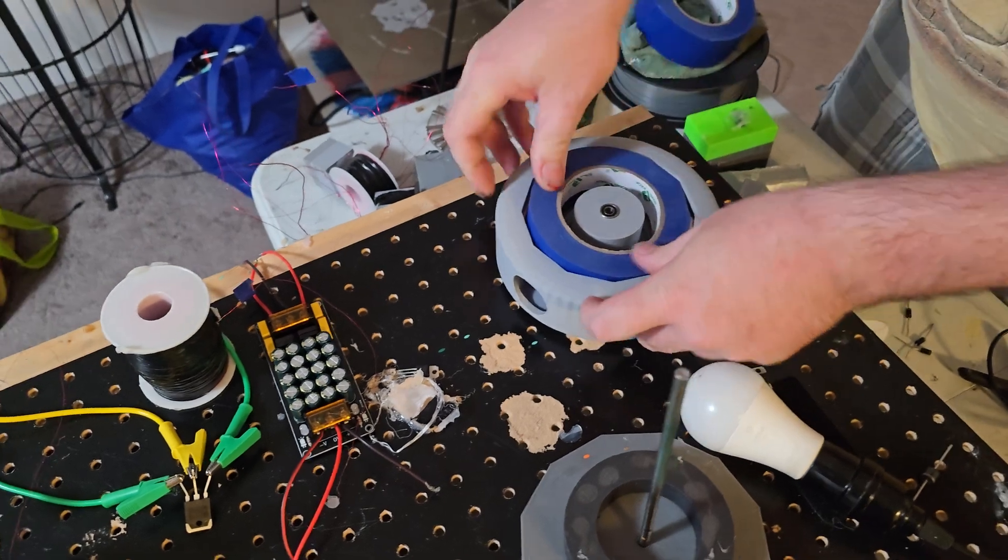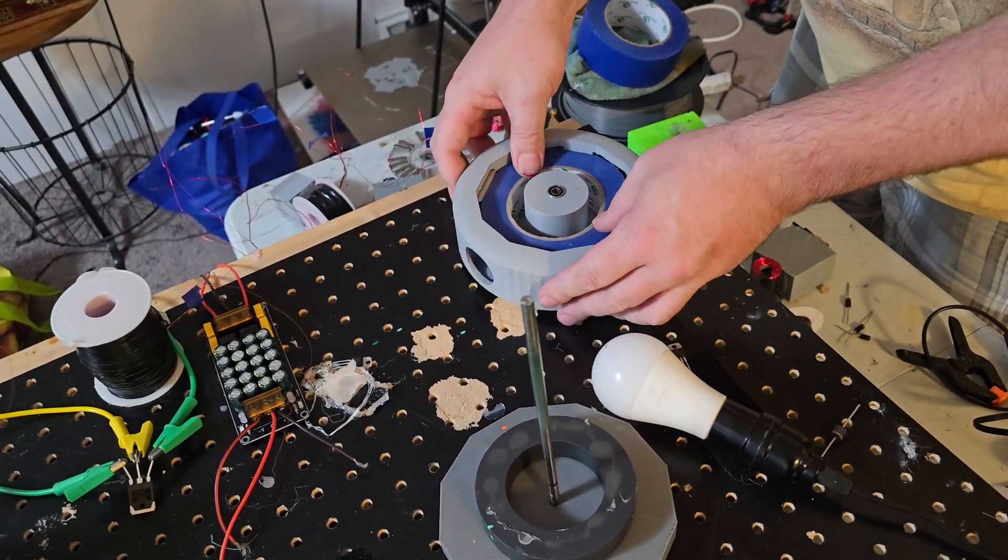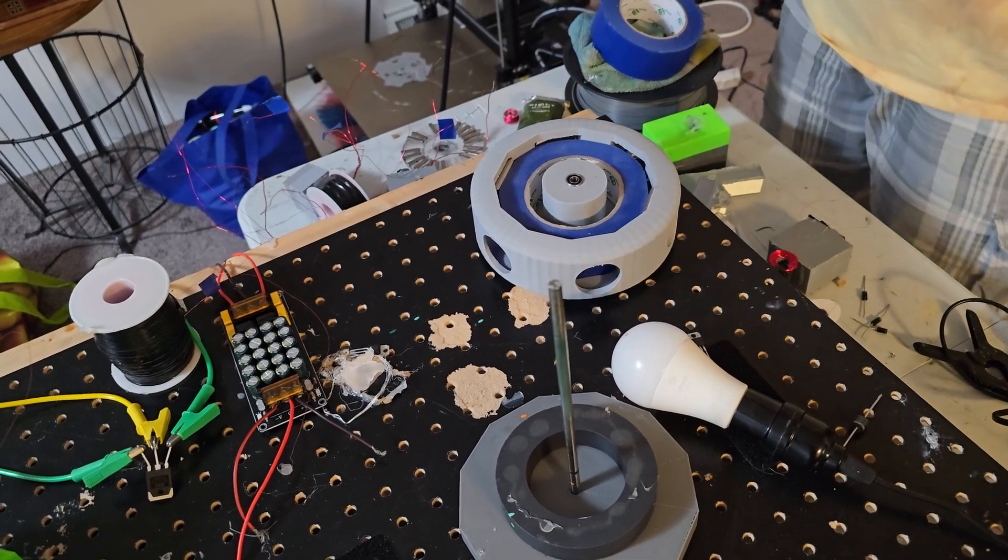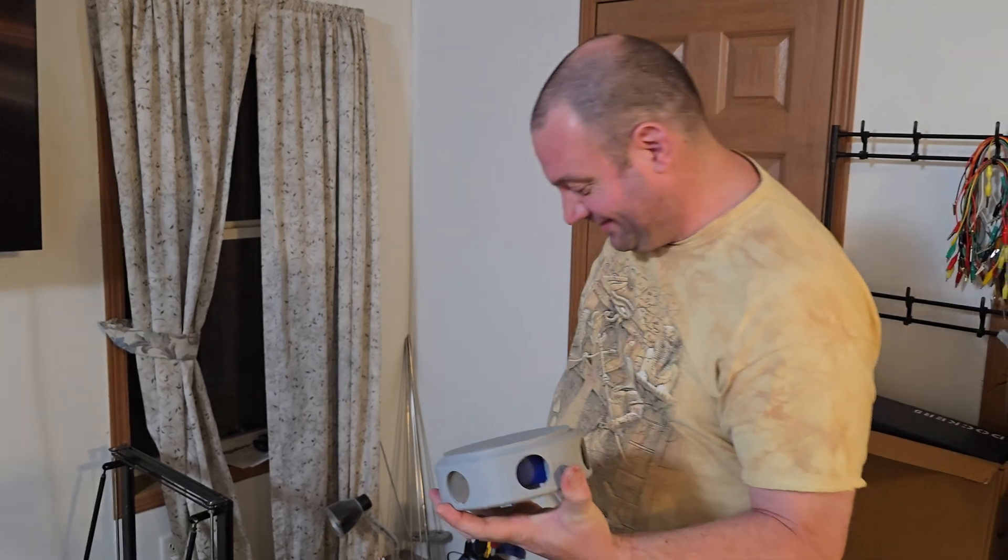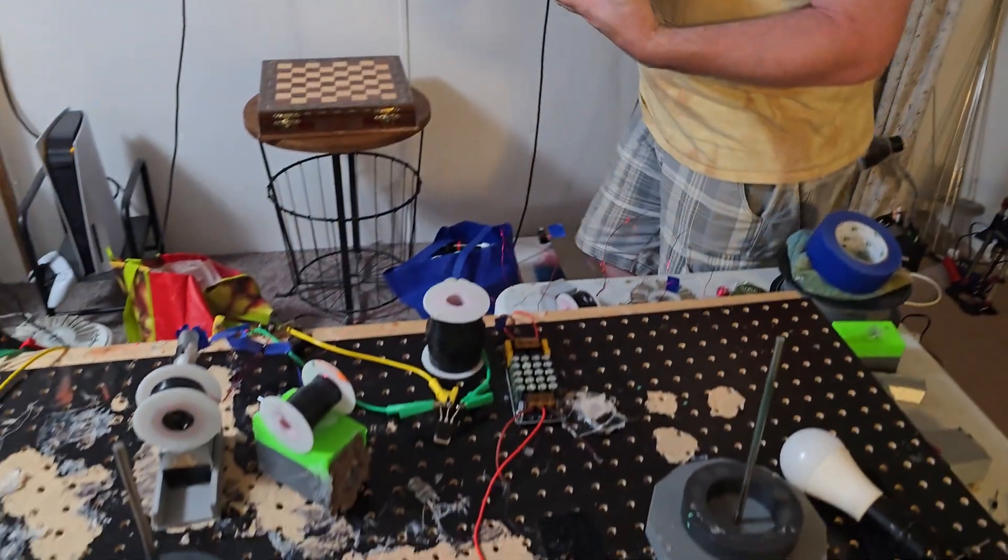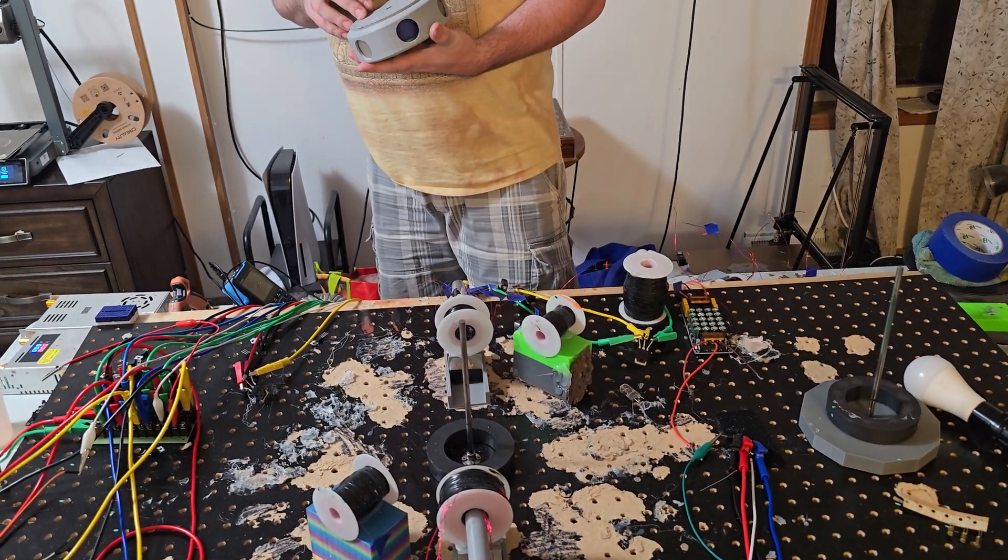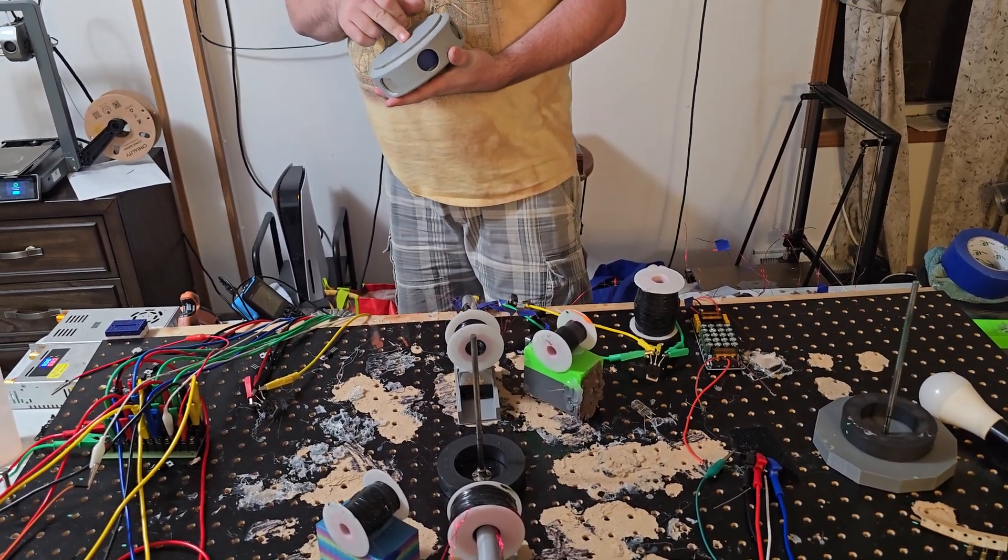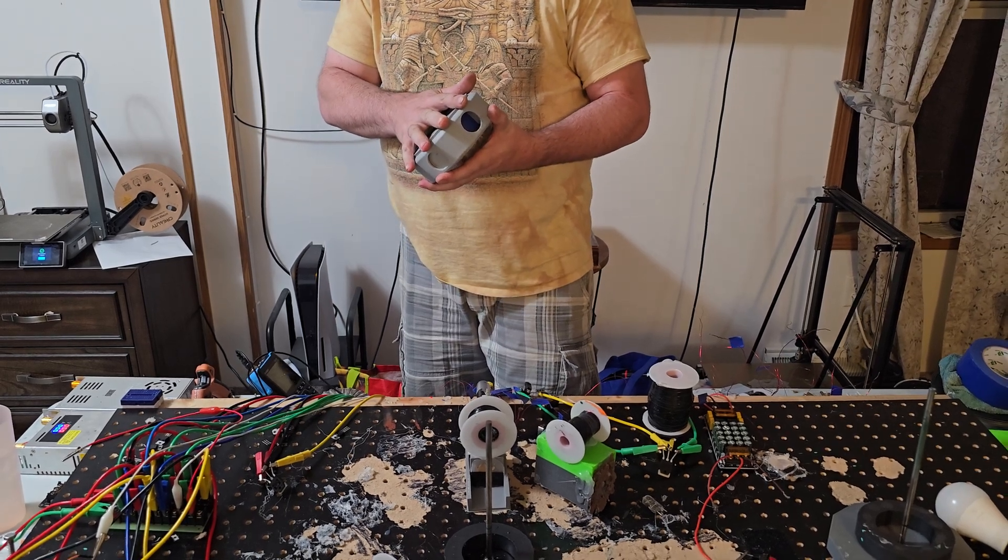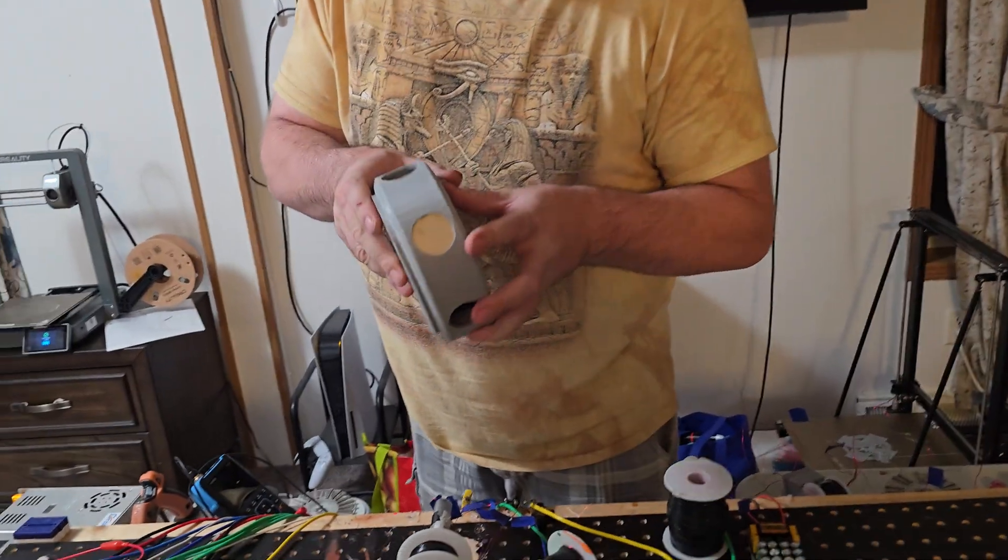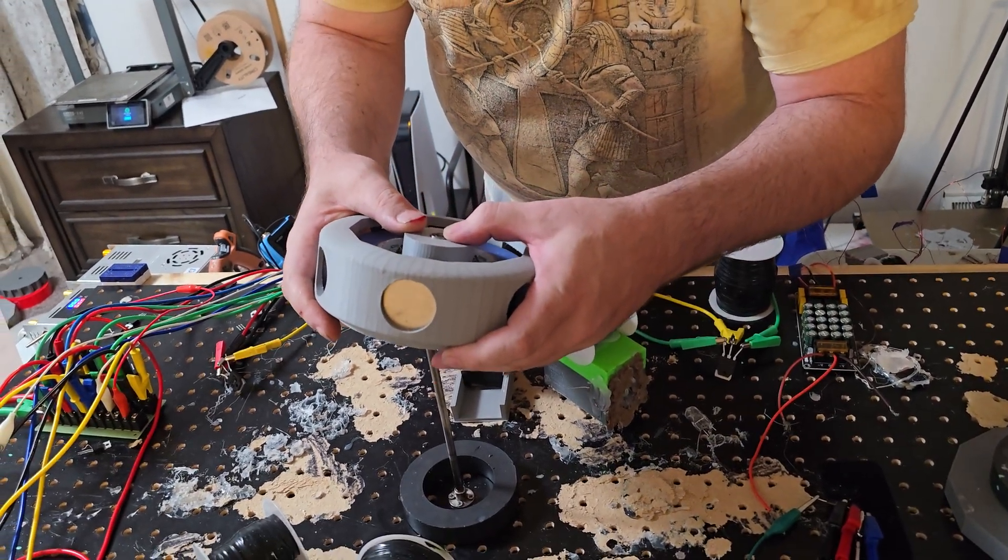Yeah nice and moldable. Oh yeah that's nice and tight man that's not going anywhere. Alright so we're not putting a bearing on this side, but we are going to put the toroid if we need to on this side. So we got to see if it'll stay afloat like this.